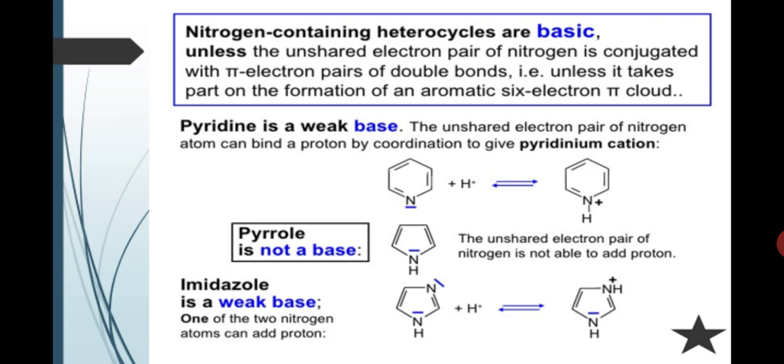Next is pyrrole is not a base. The unshared electron pair of nitrogen is not able to add a proton. Next is imidazole is a weak base. One of the two nitrogen atoms can add this proton.